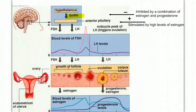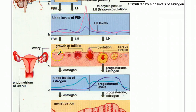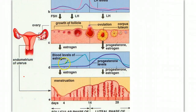The follicle-stimulating hormone and the luteinizing hormone target the ovaries. As FSH begins to rise, the follicle begins to grow. As the follicle grows, it secretes estrogen. As estrogen levels rise, the endometrium wall begins to build.